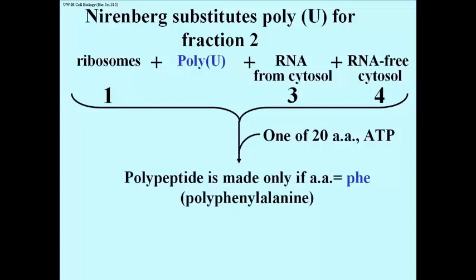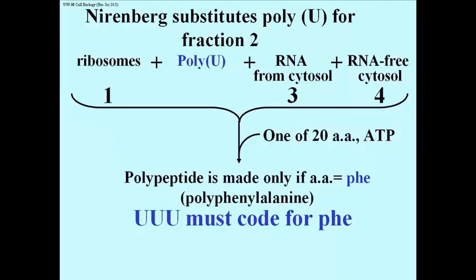He made polyphenylalanine in this system, from which he concluded that the triplet code word UUU must code for phenylalanine.